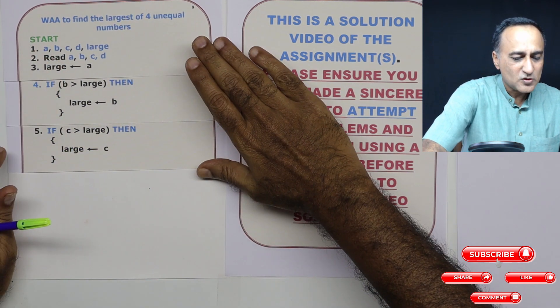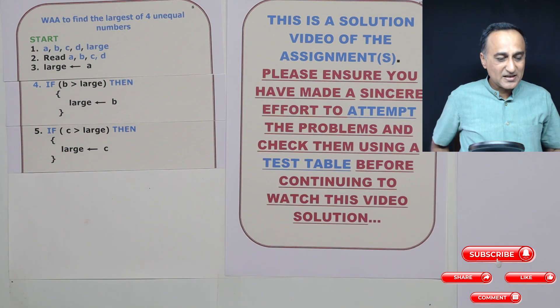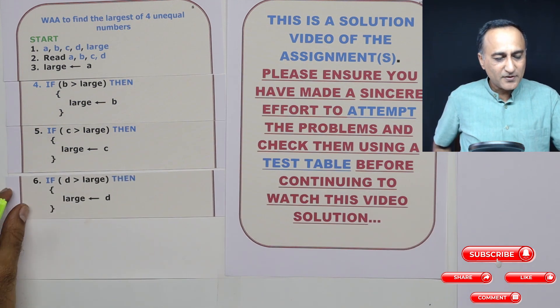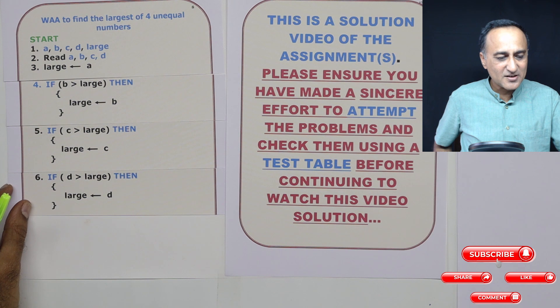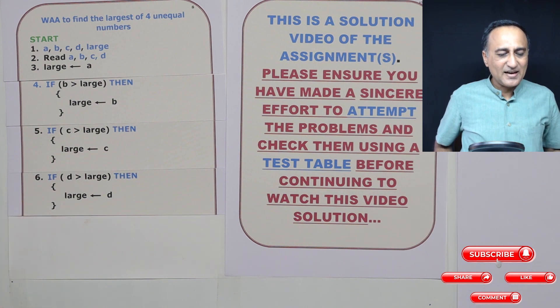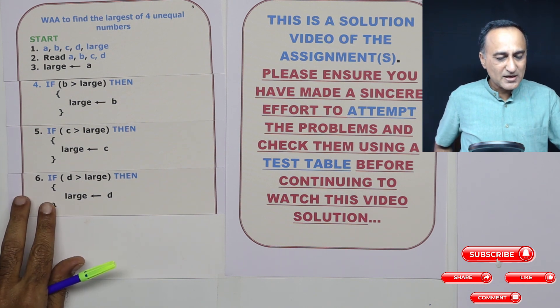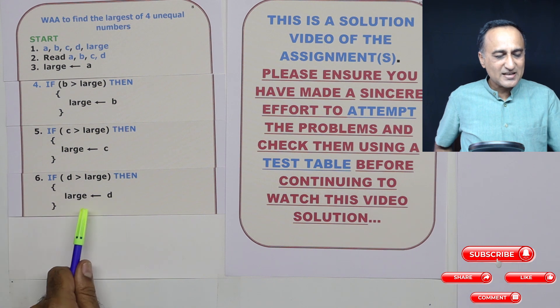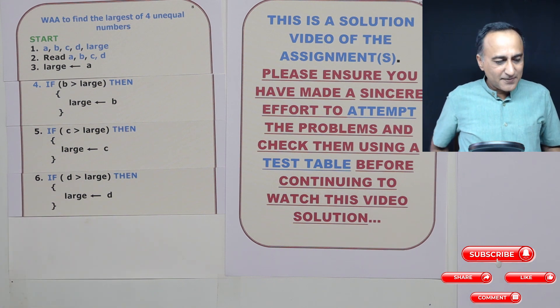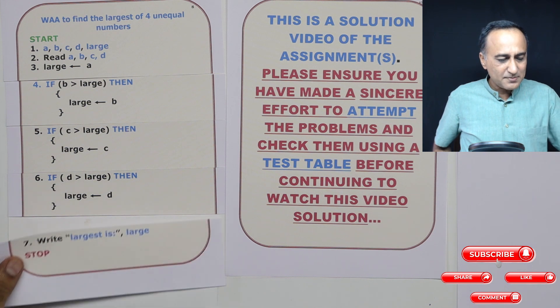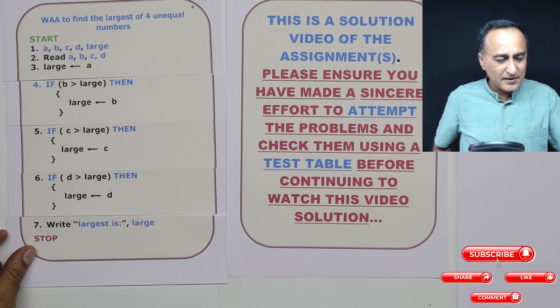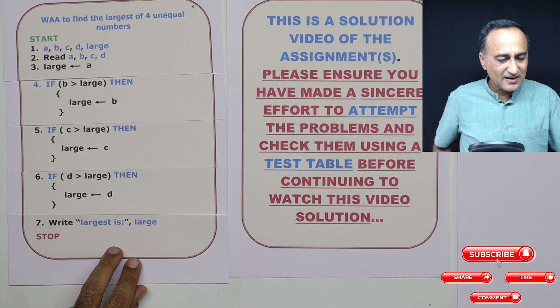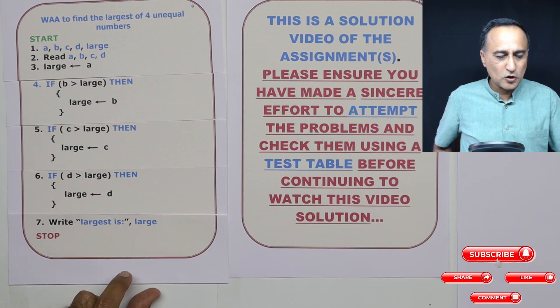Now there's only one variable left, quite easy. So I'm going to just check if D is greater than large. If D is greater than large, then I'm going to say large is D. And finally, at the seventh step, I'm simply going to print that the largest is large, and then I'm going to stop.